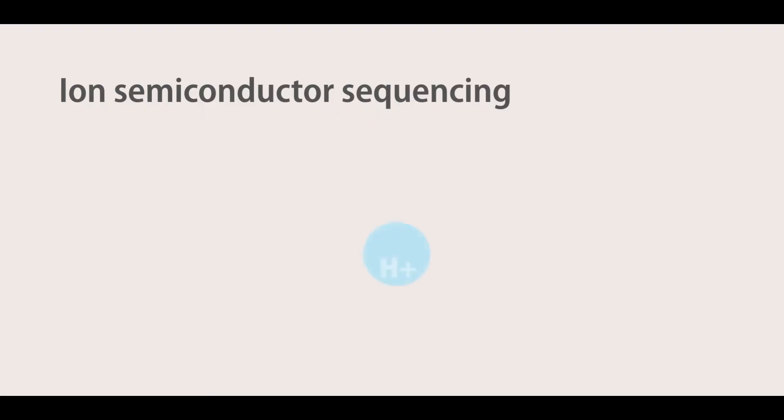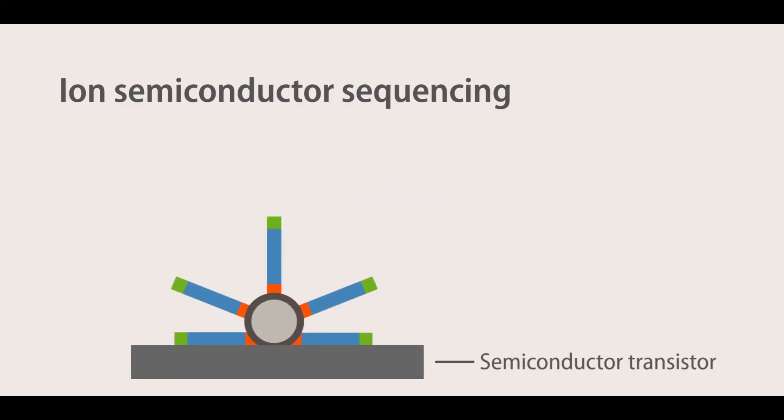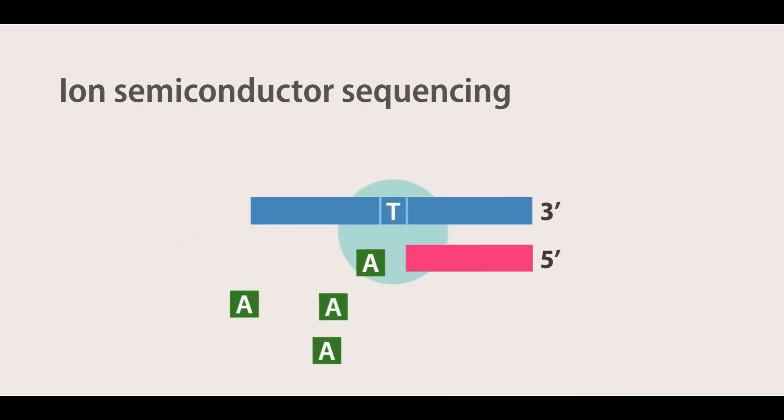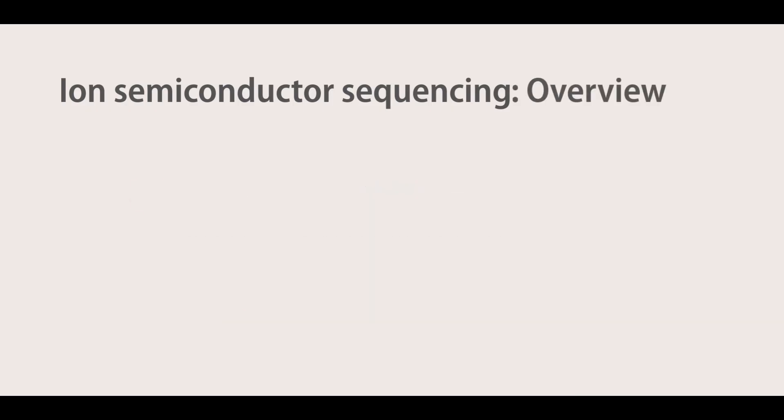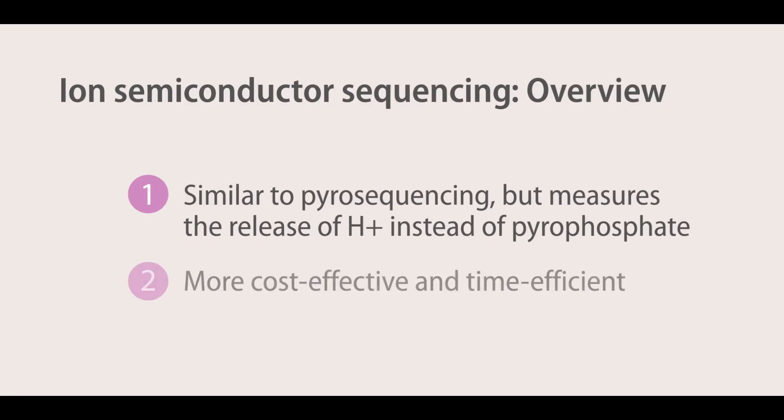Ion semiconductor sequencing utilizes the release of hydrogen ions during the sequencing reaction to detect the sequence of a cluster. Each cluster is located directly above a semiconductor transistor, which is capable of detecting changes in the pH of the solution. During nucleotide incorporation, a single hydrogen ion is released into the solution, and it is detected by the semiconductor.